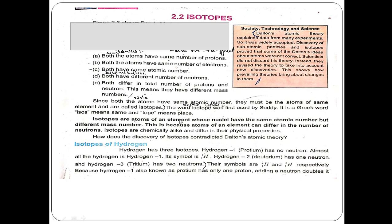We have two words in combination for the word 'isotopes.' The first one is 'iso' and the second one is 'topos.' Iso means same and topos means place. This is a Greek word.